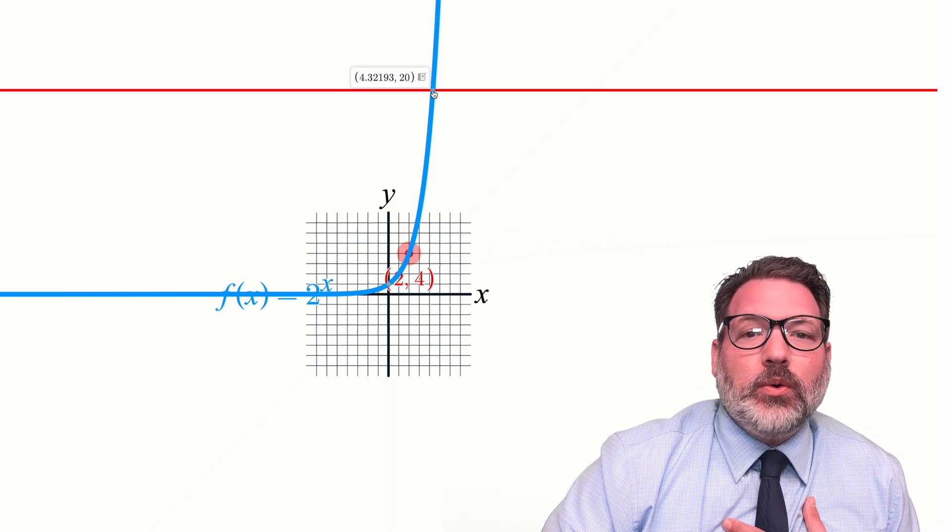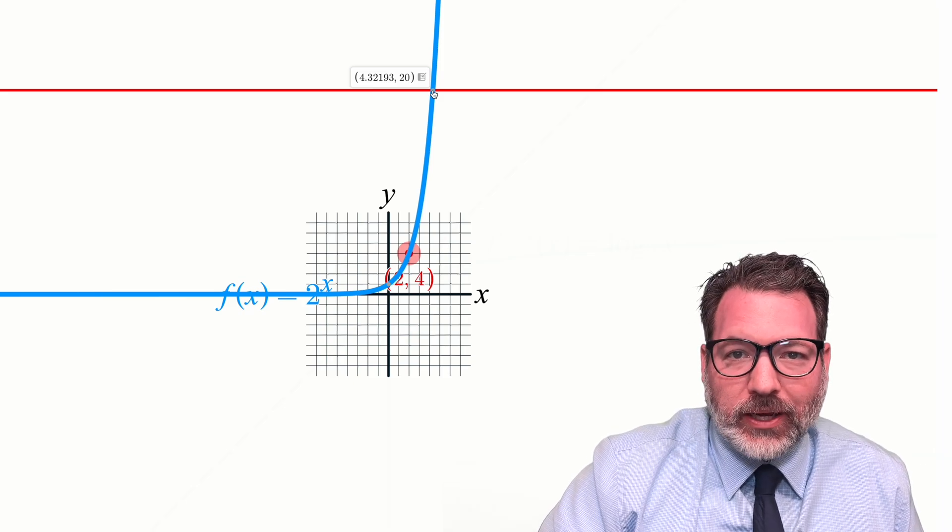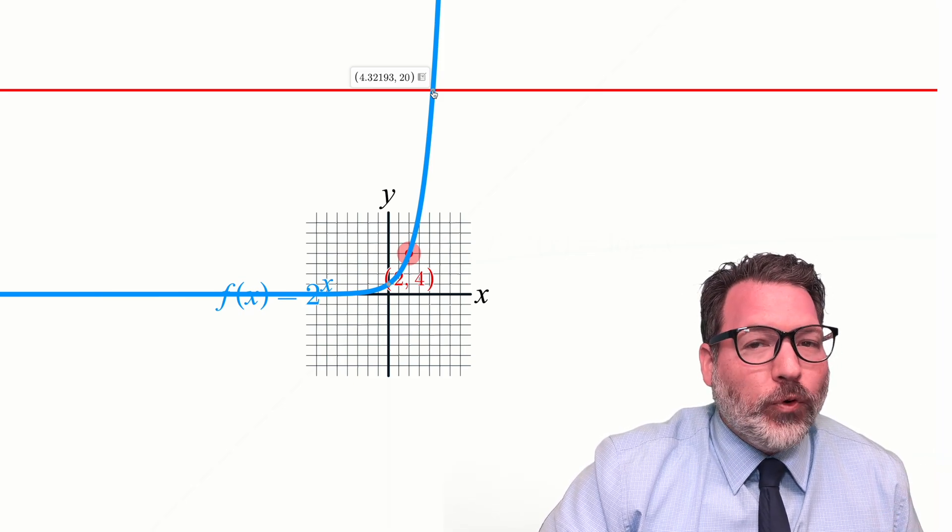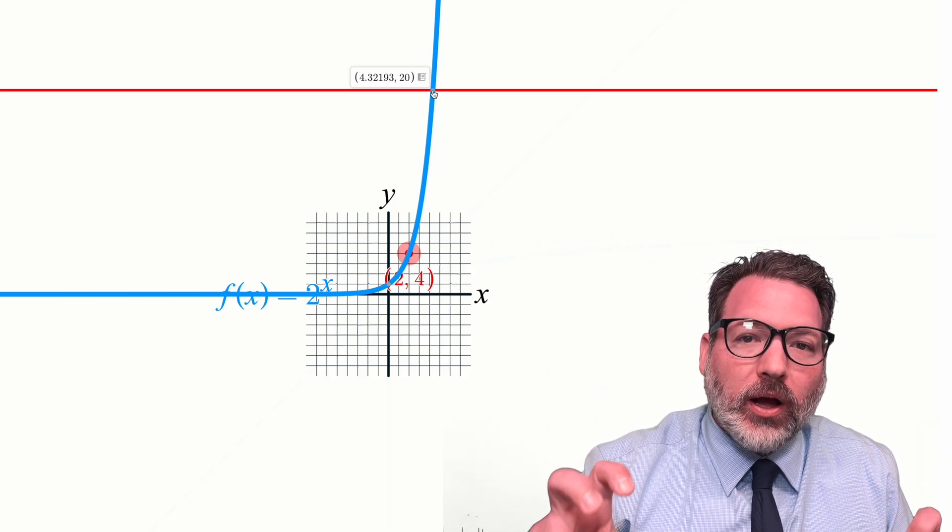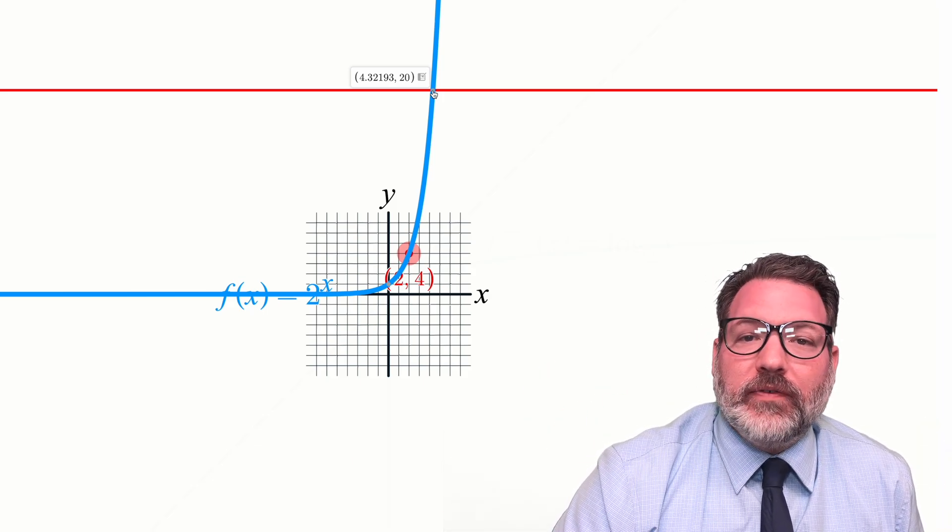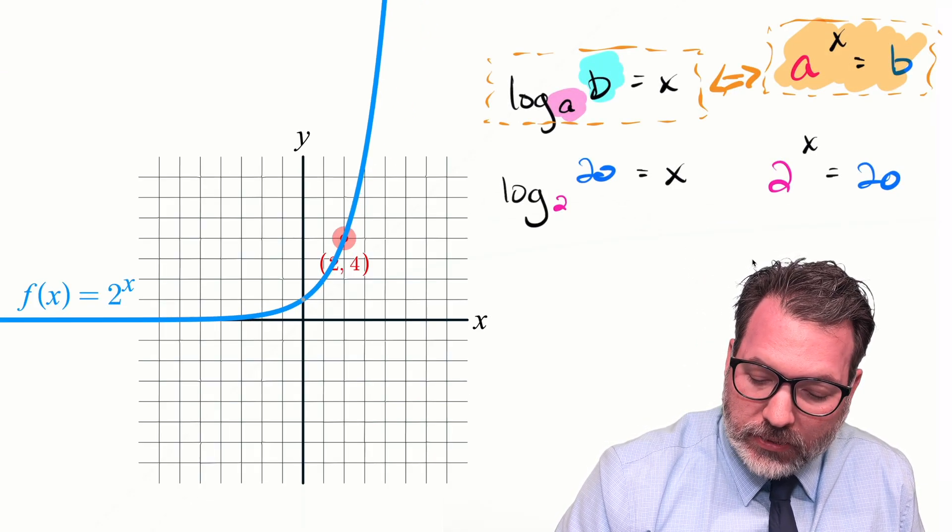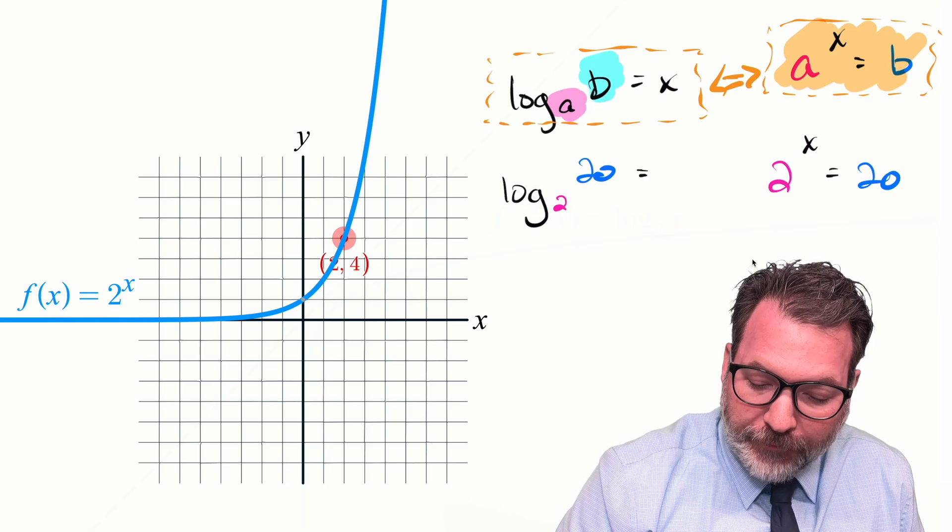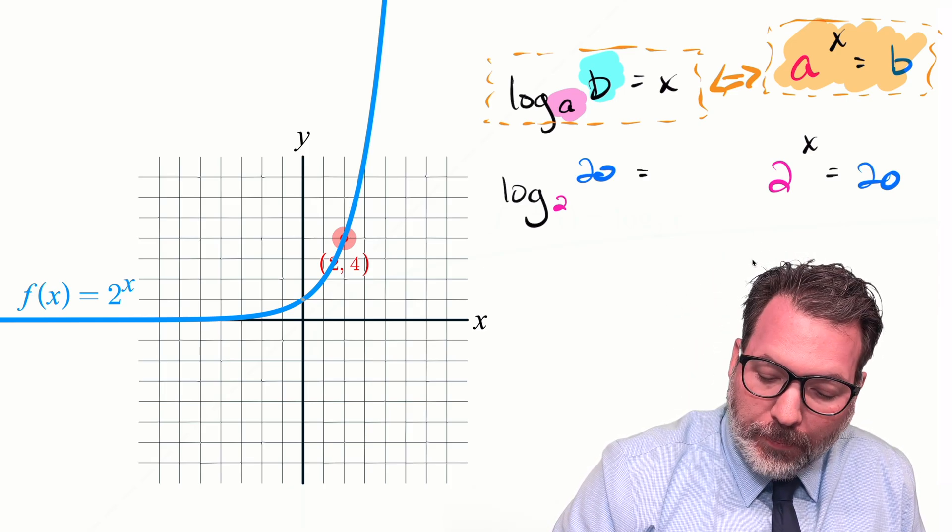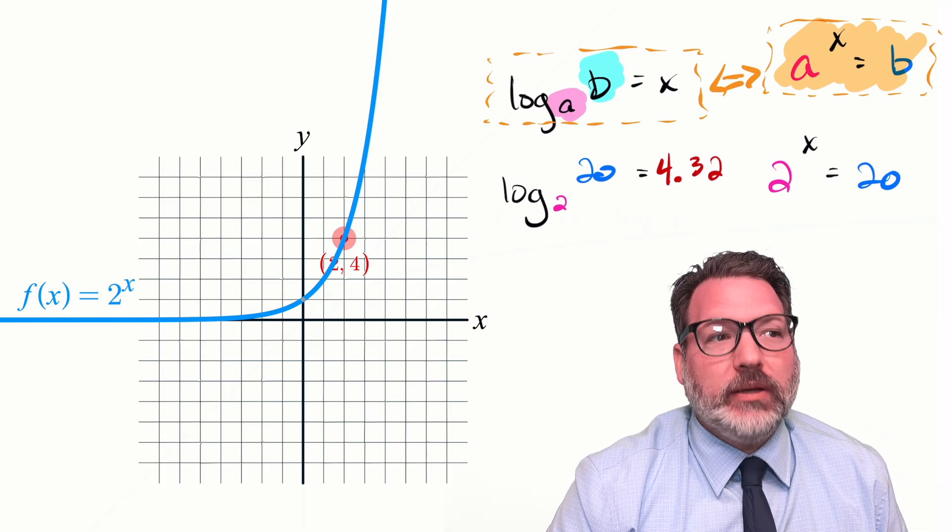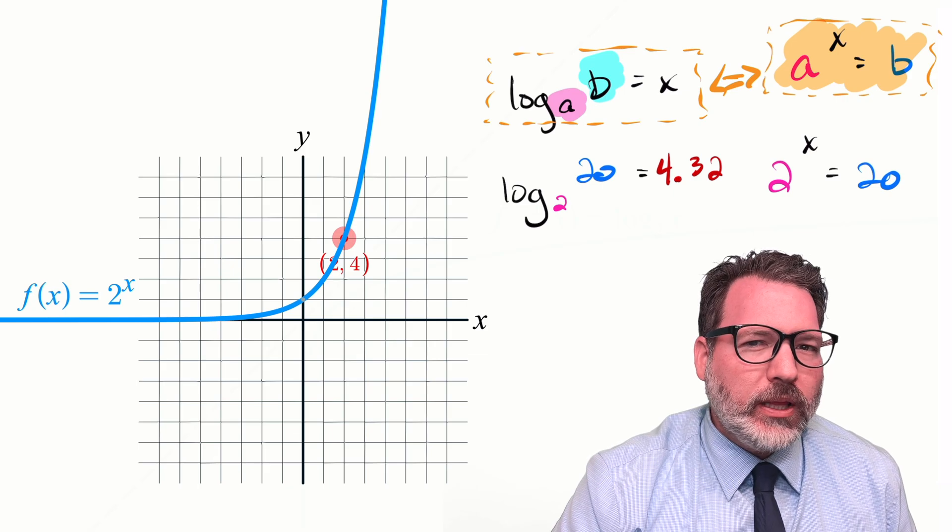We can even get our graphing calculator platform to tell us where that intersection occurs. Just like we were thinking, we need a value that was more than 4, but less than 5. What Desmos is telling us right now is that at roughly 4.32 and then a bunch more decimal places, we get a power of 2 that does in fact give us back 20. And so first of all, we can go ahead and say what this logarithm is. Because it is the roughly 4.32 power of 2 that gives us back 20, it must be the case that log base 2 of 20 is roughly 4.32.